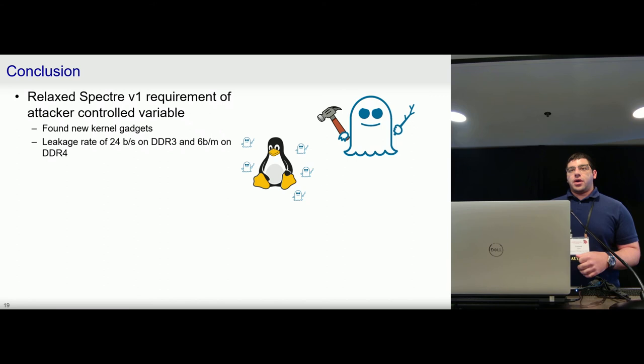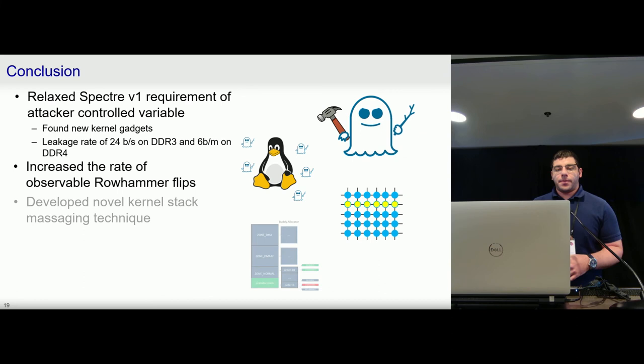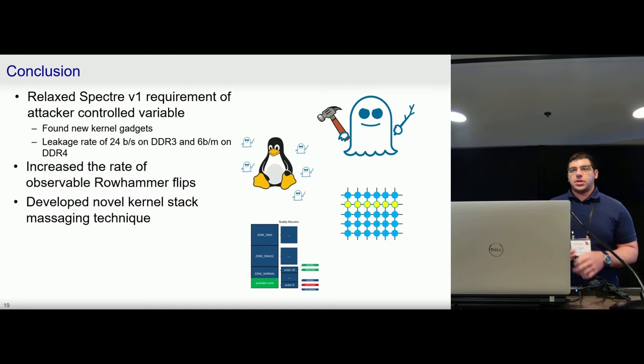So in conclusion, we relaxed a key requirement of Spectre V1 that the attacker has to have control over the array offset variable. This led us to find new gadgets in the kernel, and we demonstrated proof of concept attacks with leakage rates of 24 bits per second and 6 bits per minute. We also found an oversight in existing Rowhammer work that was masking many of the bit flips that were occurring in DRAM. And finally, while I didn't discuss it in this presentation, in the paper we show a new kernel stack massaging technique that we use to flip bits in the kernel stack. And while this was required for this attack, this could be useful for any future Rowhammer work that also wants to target kernel stack variables. Thank you for your time and attention.